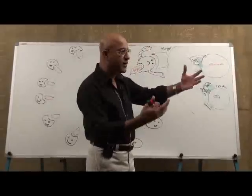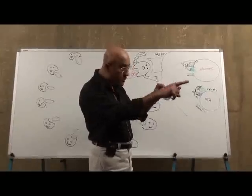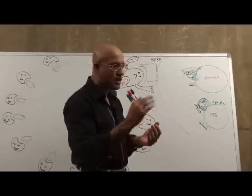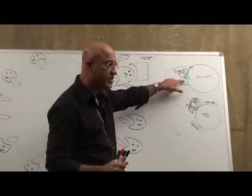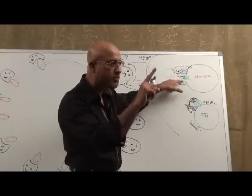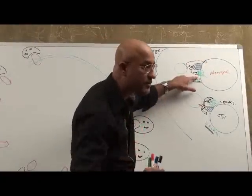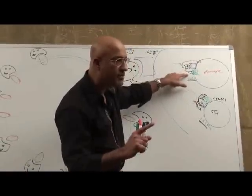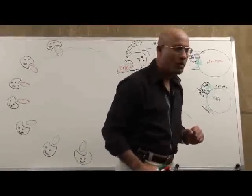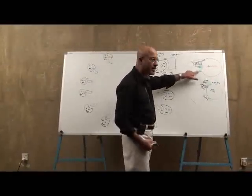Heterozygous CCR5 mutation means one parent gene is defective and the other is normal. These people express half normal and half defective CCR5. So the virus has a chance to bind with only half the co-receptors. It will be poorly entering and progressing to AIDS slowly. This is another important clinical point — about 10 to 15% of Northern European descendants are slow progressors due to heterozygous CCR5 mutation.